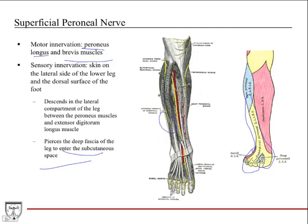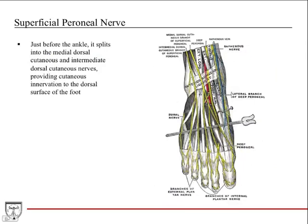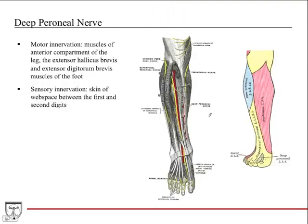The superficial peroneal nerve has extensive sensory innervation covering the lateral side of the lower leg and the dorsal surface of the foot — visible as the large yellow region on the dermatome map. It descends through the lateral compartment between the peroneus muscles and the extensor digitorum longus, then pierces the deep fascia of the leg to enter the subcutaneous space. Just before the ankle it splits into the medial dorsal and intermediate dorsal cutaneous nerves.